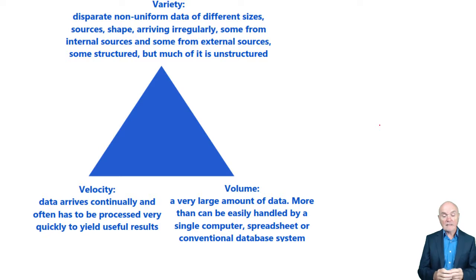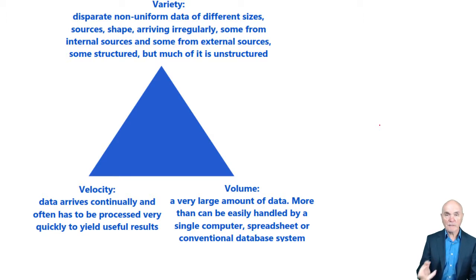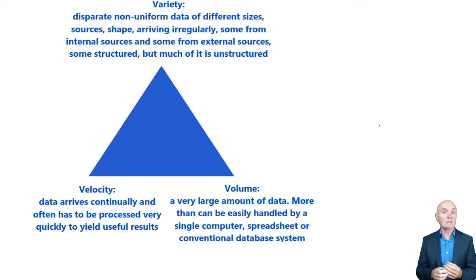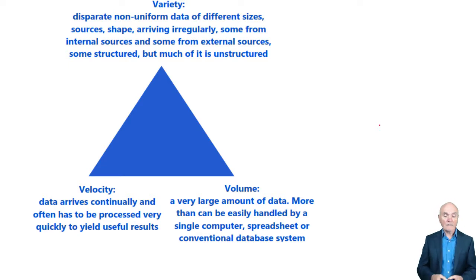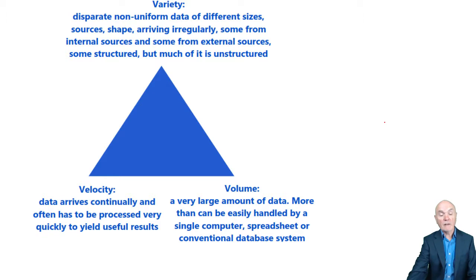Sometimes another V is added, called veracity — in other words, the truth. This data is going to be trawled through, analysed, and looked at for trends, patterns, and correlations, giving insights into buying behaviour and consumer preferences. We need assurance that the information is accurate and true — veracity. For example, if we're using facial recognition, how good is it? What happens if somebody comes in wearing sunglasses or changes the colour of their hair or their hairstyle? Will it send the system haywire?